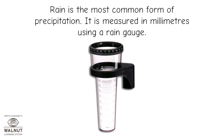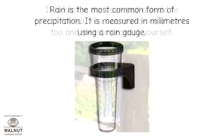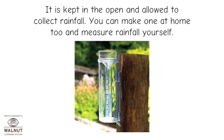Rain is the most common form of precipitation. It is measured in millimeters using a rain gauge. It is kept in the open and allowed to collect rainfall. You can make one at home too and measure rainfall yourself.